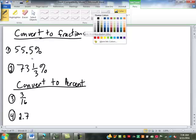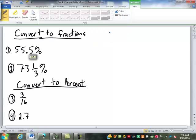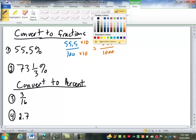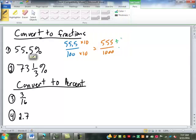Okay, so up top here, converting 55.5% into a fraction. Where do we start? 55.5 over 100, then what? Multiply by 10 to get rid of the decimal. So 555 over 1,000, and then we can reduce by 5. 111 over 200. Questions?